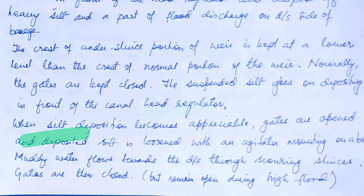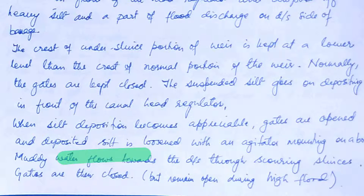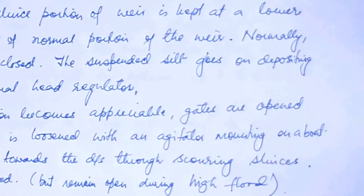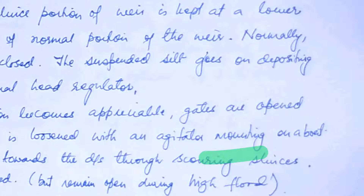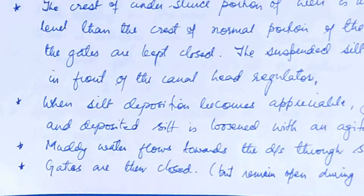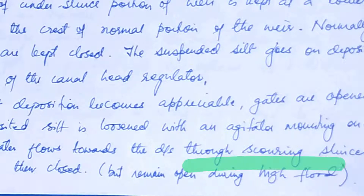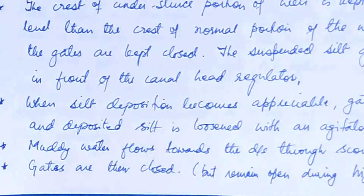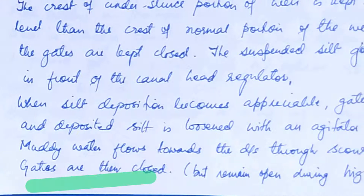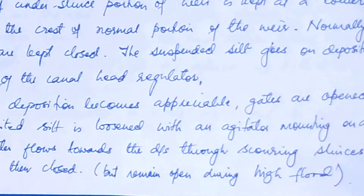When silt deposition becomes appreciable, the gates are opened and the deposited silt is loosened with an agitator mounted on a boat. The resulting muddy water flows downstream through the scouring sluices. Then the gates are closed, but we also open the gates during high floods.